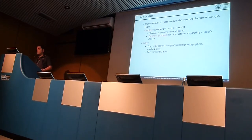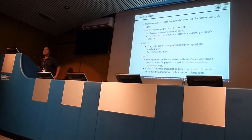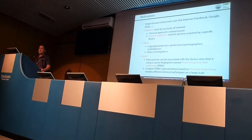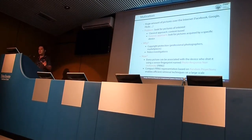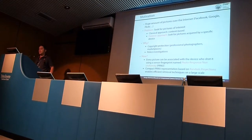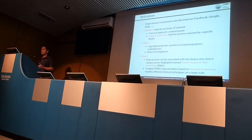We can do this because every picture contains a specific fingerprint called the Photo-Response Non-Uniformity (PRNU), which is unique to that particular sensor. So we can link a picture to a specific sensor. Importantly, what we present in this talk is a very compact new representation based on random projection, and this compact representation enables searching these fingerprints at very large scale.